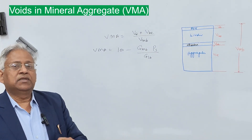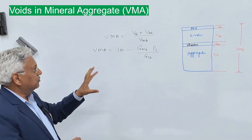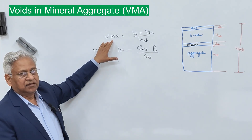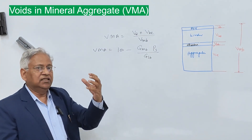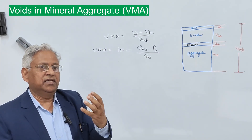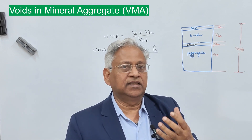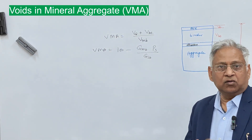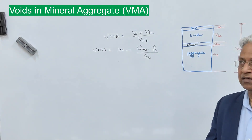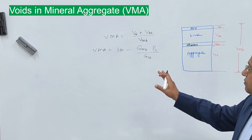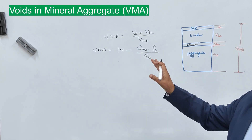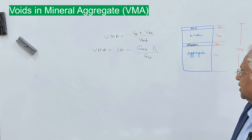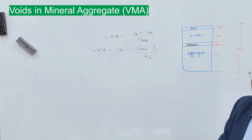One of the design parameters in bitumen mix design is to control VMA. The role of VMA is important because it provides space for expansion of bitumen during hot summer, and therefore it should be adequately provided in a mixture.